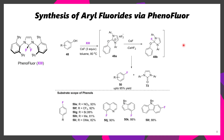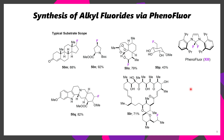In terms of aryl fluorinations, it's also possible to take a phenol and treat it with phenofluor in the presence of cesium fluoride to afford the corresponding aryl fluorides. This has been applied to a number of aryl fluorides as well as heteroaryl fluorides. In addition to the scope of aryl fluorides, it's also possible to prepare alkyl fluorides from the corresponding alcohols using phenofluor.